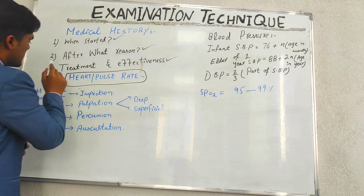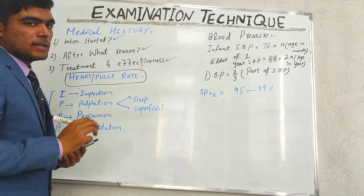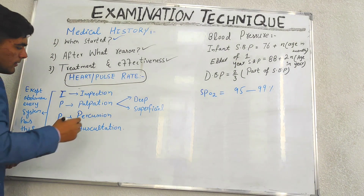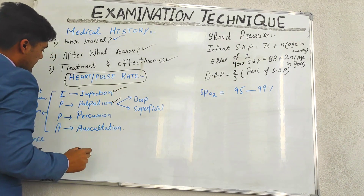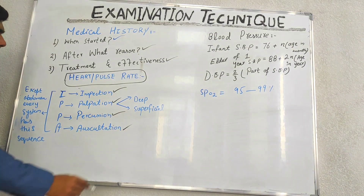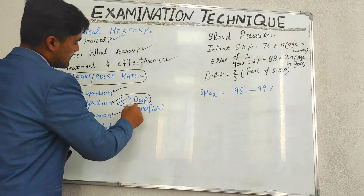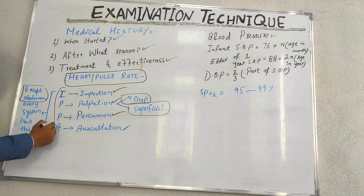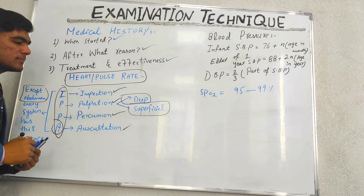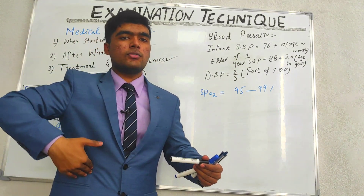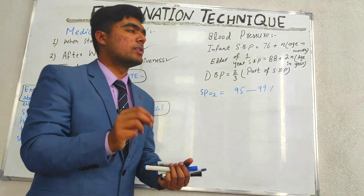Talking about heart and pulse rate, we have a different mnemonic — IPPA: Inspection from the eye, Palpation, Percussion, and Auscultation. In palpation, we may palpate deeply or superficially. Remember, except for the abdomen, every system follows this sequence. In the abdomen, we have to auscultate first, because after palpation the sound changes a bit, so we must do auscultation first.